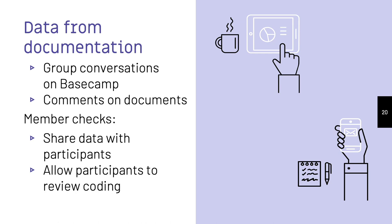Teamwork involves a lot of interpersonal communication. While technically open to all CROW team members on our platforms, these conversations are not public. So, in addition to working only with team members who give informed consent, we have two member checks during data collection. We give participants control over the data we gather for analysis, then ask them to review the ways we've coded data before we build personas.